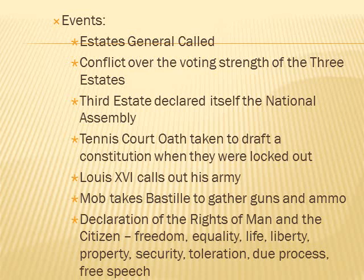Events of the French Revolution: the Estates General was called to raise tax money. There was a conflict over the voting strength of the three estates. The Third Estate declared itself the National Assembly. When locked out of their meeting place, they took the Tennis Court Oath to draft a constitution. Louis XVI called out his army. A mob took the Bastille to gather guns and ammunition to ensure the king's army couldn't cut down the revolution in Paris. The Declaration of the Rights of Man and the Citizen was issued, emphasizing freedom, equality, life, liberty, property, security, toleration, due process, and free speech.